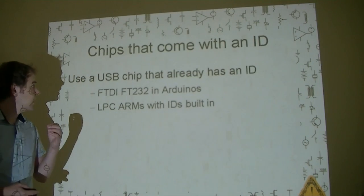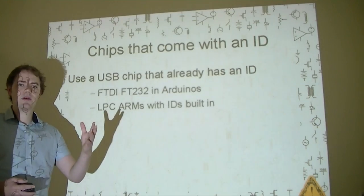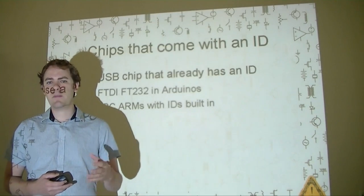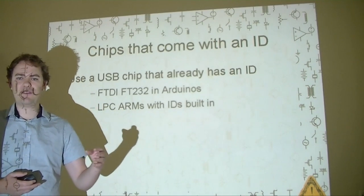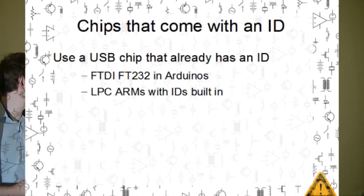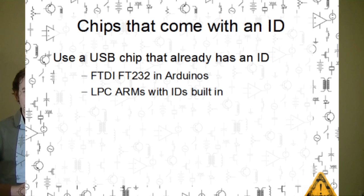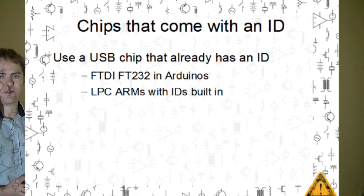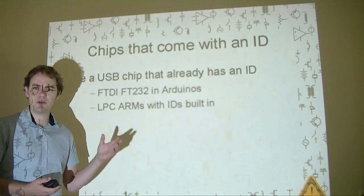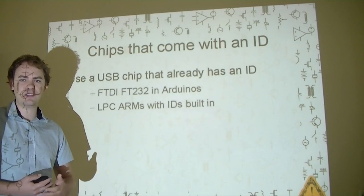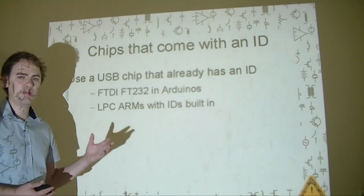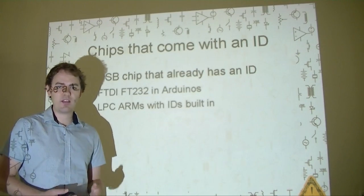One option is to give up and use an older design — this is the solution suggested to people who want to do Arduino clones but don't want to buy the vendor ID for the new USB chip. They say just do an older version with the FT232 USB-to-serial converter chip. There are also some ARM chips out there with built-in USB and USB ID functions, so you can get chips that already have a vendor's ID burned into them permanently.